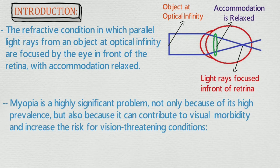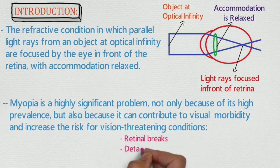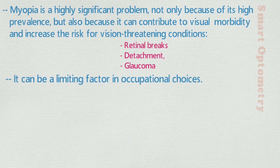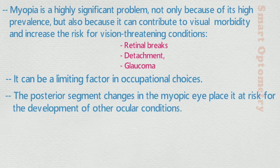Myopia is a highly significant problem not only because of its high prevalence, but also because it can contribute to visual morbidity and increase the risk for vision-threatening conditions like retinal breaks, detachment, and glaucoma. It can be a limiting factor in occupational choices. The posterior segment changes in a myopic eye place it at risk for development of other ocular conditions.